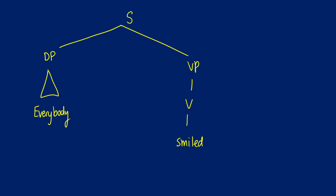Let's take a look at this in a tree, and let's talk about types. 'Smiled' is type ET — it's an intransitive verb, looking for a subject and outputting a truth value. We know the sentence is going to be a truth value, but 'everybody' is not type E here. Because our translation is lambda P dot for all X, P(X), what's happening is we're taking a function ET and sending it to a truth value. So 'everybody' is type ETT. Our lambda P is what we're inserting as the ET, and the DP is also type ETT — we're still getting a truth value at the sentence level.